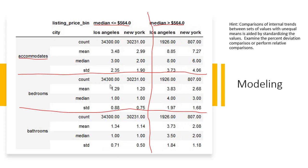So we see bedrooms, the mean is 1.29. The median is 1.0. And the standard deviation is 0.88. Bathrooms, the mean is 1.34. The median is 1. The standard deviation is 0.71. When we compare those then to properties greater than $564, we have more accommodations, mean and median. We have more bedrooms, 3.83 to 1.29. We have more bathrooms with 3.73 as compared to 1.34 and 3.5 of the median. So we like to look at some of these comparisons and see if they make sense to us.